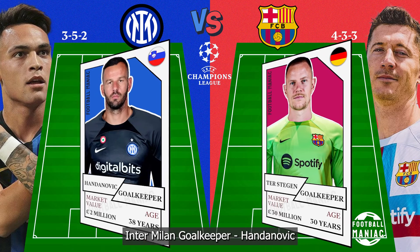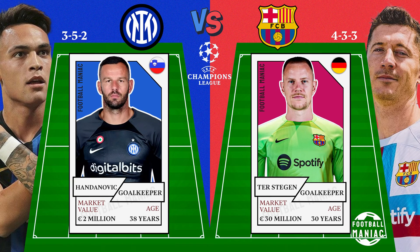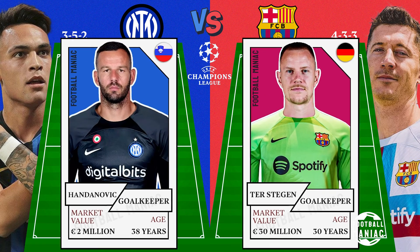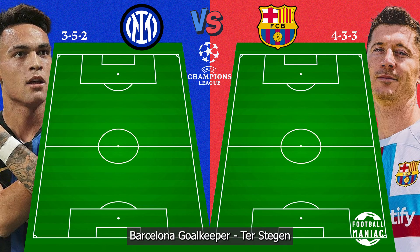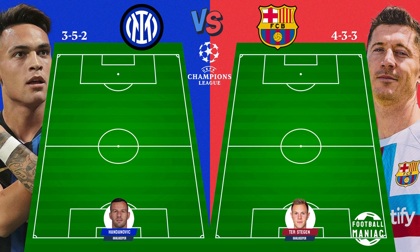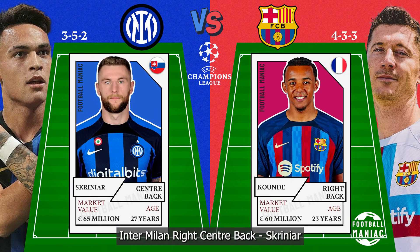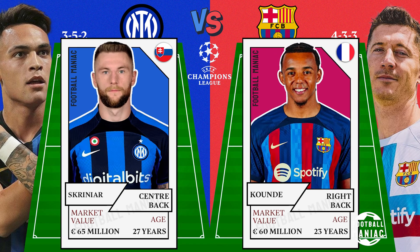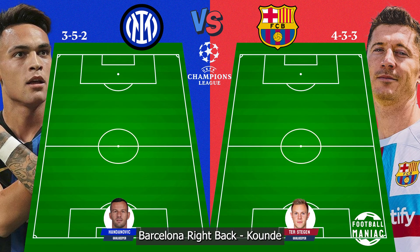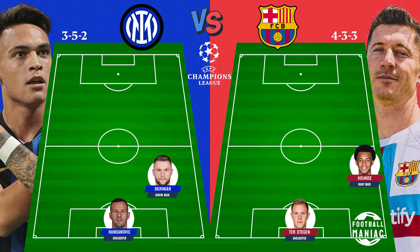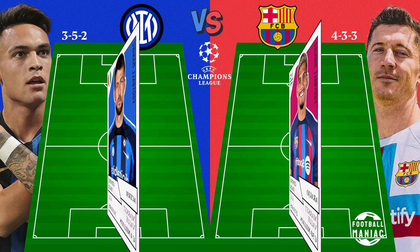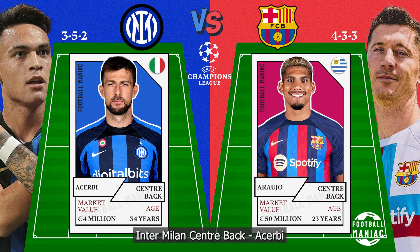Inter Milan goalkeeper: Handanovic. Barcelona goalkeeper: Ter Stegen. Inter Milan right center-back: Skriniar. Barcelona right-back: Koundé. Inter Milan center-back: Acerbi.